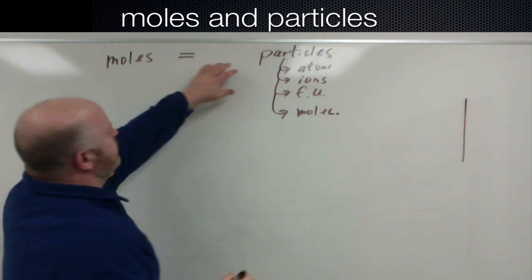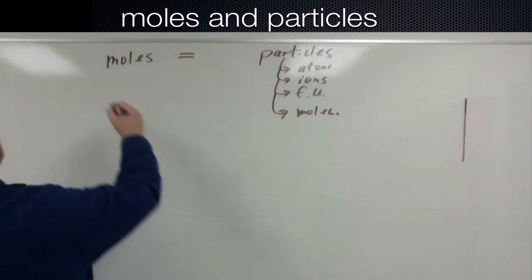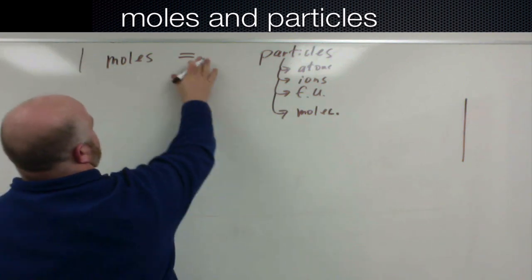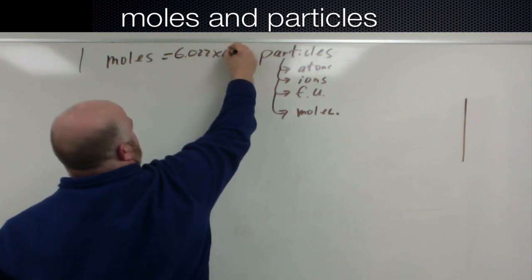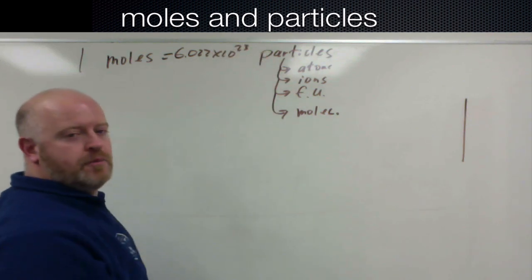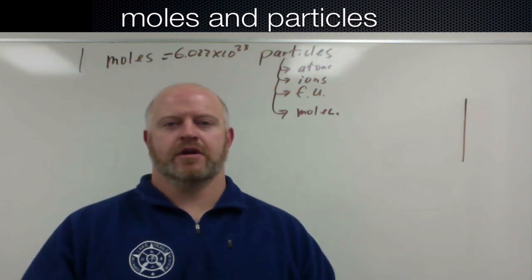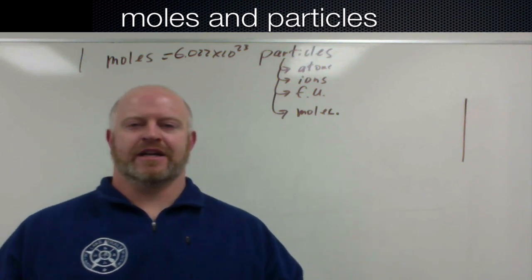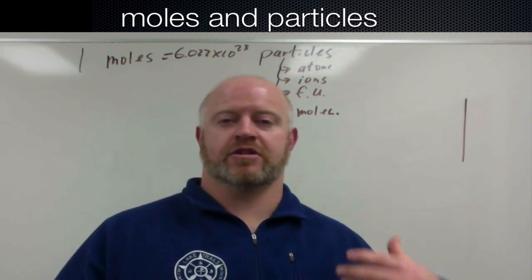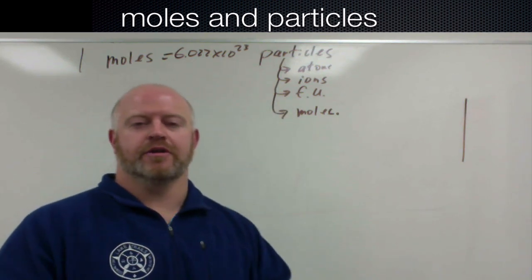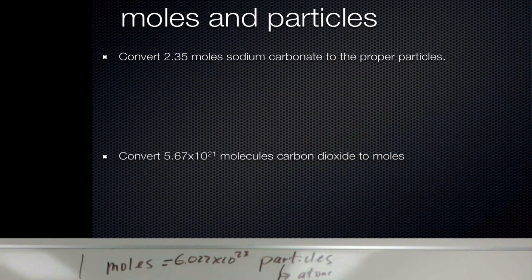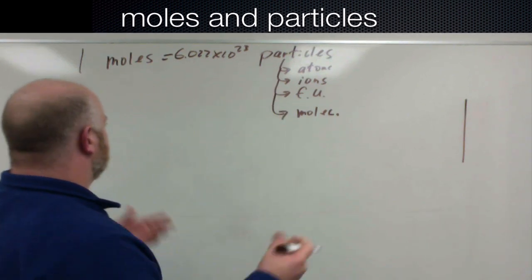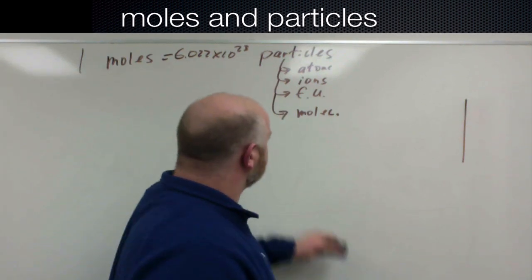So we have this relationship between these two and we know that for every one mole we always get 6.022 times 10 to the 23rd particles of something. So what we want to do is set up some simple dimensional analysis to solve for these. We're going to do some practice on the board for each one of those and then we'll do the ones on your screen in class also. So let's talk about an example.